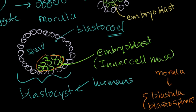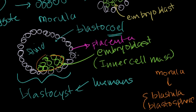You might ask: if the inner cell mass is the organism, what are all those outer trophoblast cells? That is going to turn into the placenta. I'll do a future video about how babies are born — a baby was actually born in our house this past year. The placenta is really what the embryo develops inside of, and it's the interface between the developing fetus and its mother in humans and mammals.